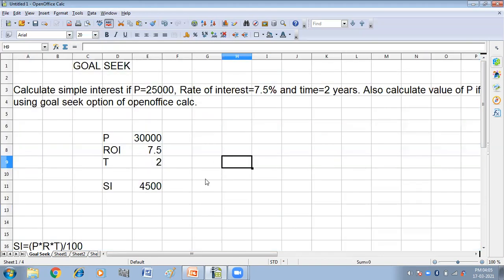Now you can see, so principal amount has been changed to 30,000 so that we can get the simple interest 4500. So this is all about Goal Seek.